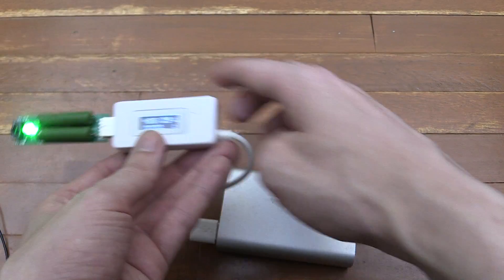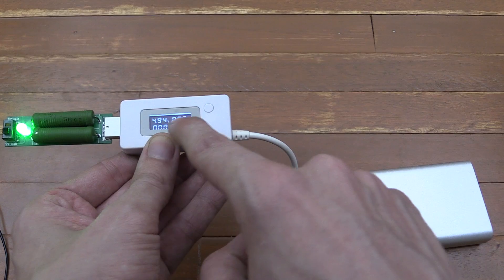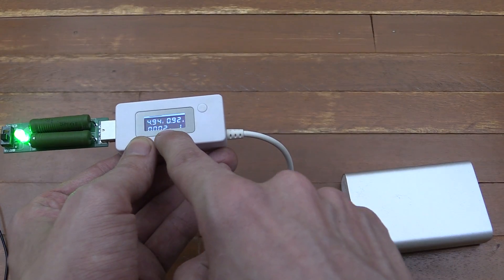And you can see that it has come on, and we're reading 4.89 volts, 0.92 amp, and we've currently consumed 2 milliamp hour.